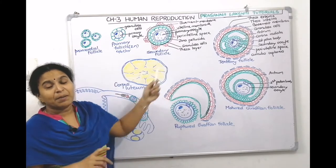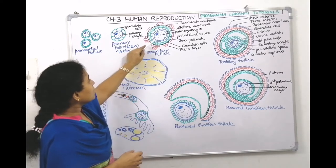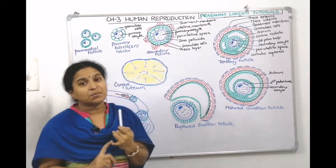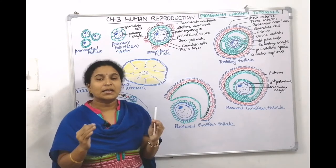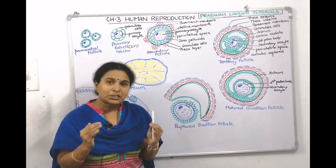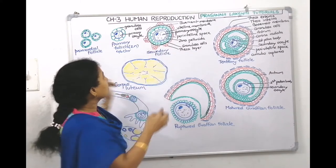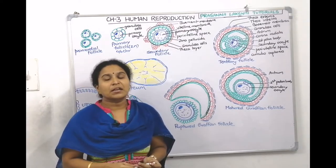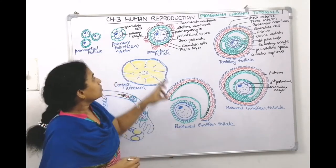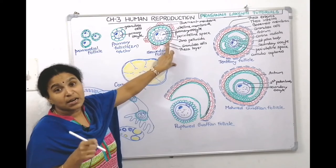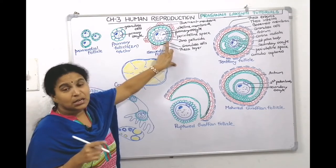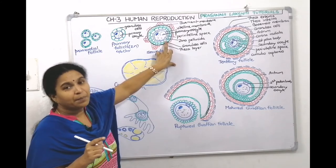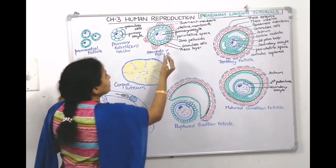At puberty, when LH and FSH are released, the primary follicle matures into a secondary follicle. The primary oocyte is surrounded by a vitelline membrane (plasma membrane). The space surrounding the vitelline membrane is called perivitelline space. Outside the perivitelline space, a zona pellucida layer forms — a non-cellular mucus layer secreted by the granulosa cells.